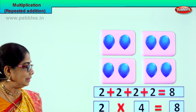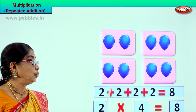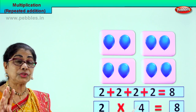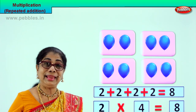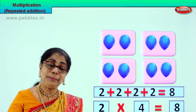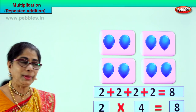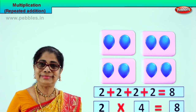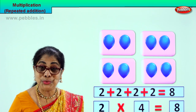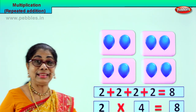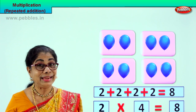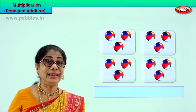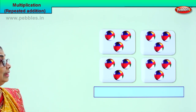Look at this. Two balloons into four boxes of two, equal to eight. Now you know what multiplication is. This is the sign. Multiplication is repeated addition. Did you learn? Did you enjoy this? Now shall we look at another exercise? Keep in mind: multiplication is repeated addition.